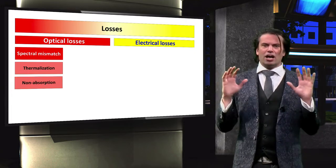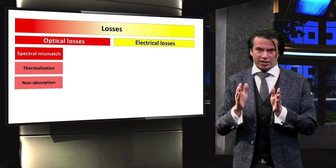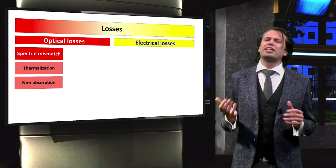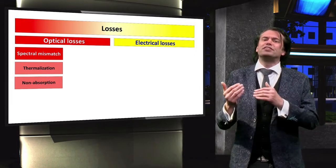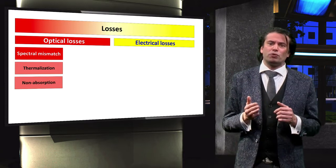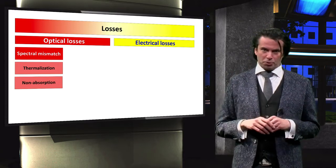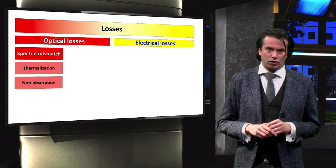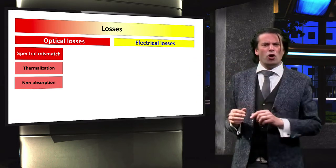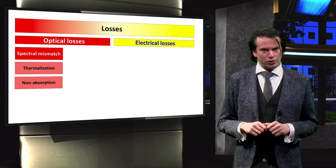By far the largest losses occur due to spectral mismatch. Spectral mismatch considers the notion that of the incident solar spectrum, some photons with a low energy level cannot be absorbed by a single junction solar cell. Of other photons with a high energy level, only a fraction of the energy of a photon can be used.